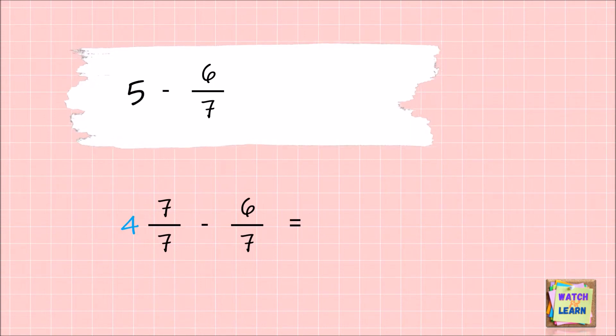Now let's subtract: four takeaway nothing is four, then 7/7 - 6/7 is 1/7. Therefore, the difference of 5 - 6/7 is 4 and 1/7.